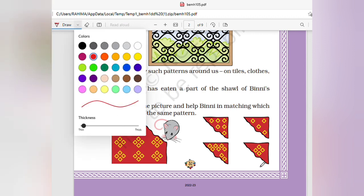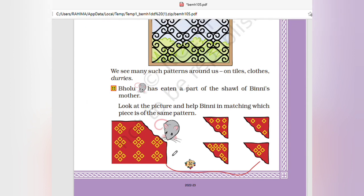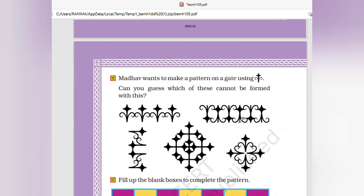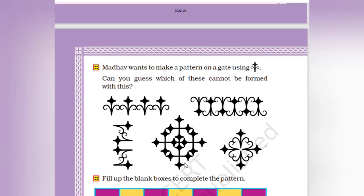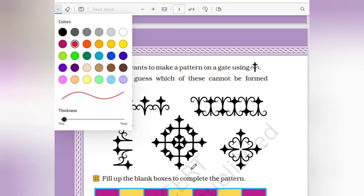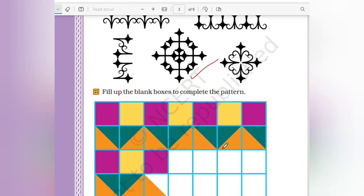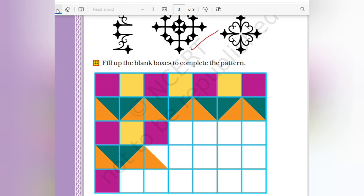There are four squares in one side. Mother wants to make a pattern on the gate using this. Can you guess which of this cannot be formed with this? This can be formed. This also is possible. This is not possible. This pattern will fill up the boxes.